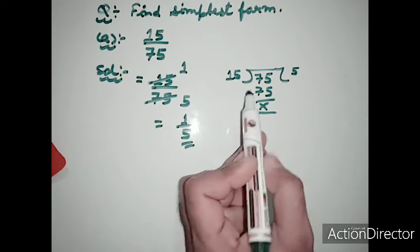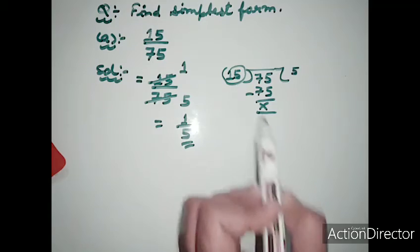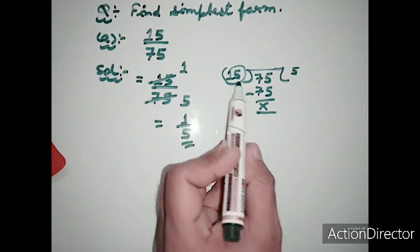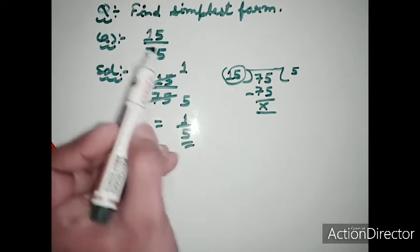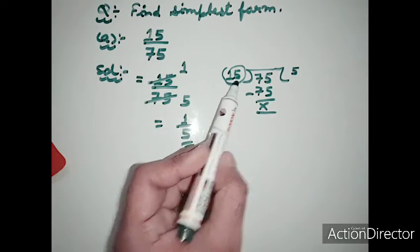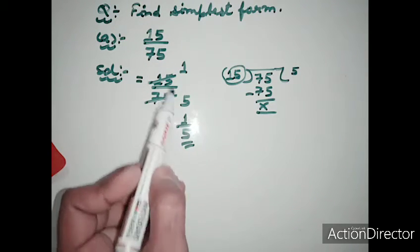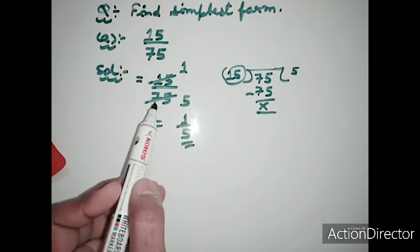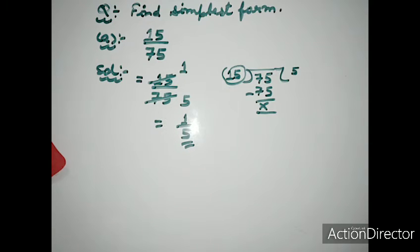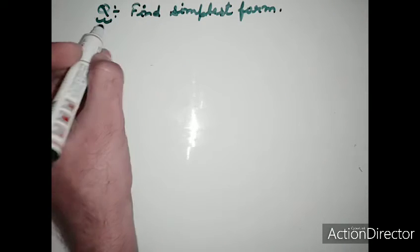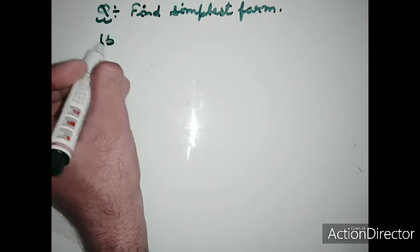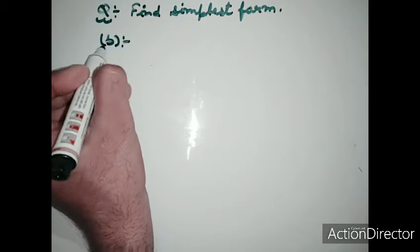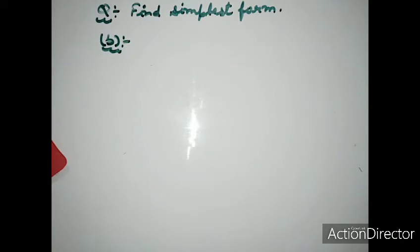We can also find the SCF of 15 and 75, which is 15. Dividing both numbers by 15 gives 1 upon 5. Now we solve part b of this question.